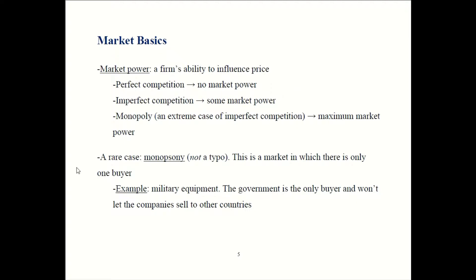We call a firm's ability to influence price its market power. When there is perfect competition, nobody can influence price, meaning every firm and every individual has zero market power. When there is imperfect competition, there is some market power, and that market power is maximized in the case of the monopoly.